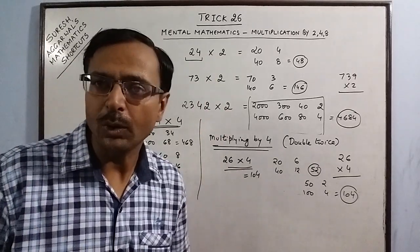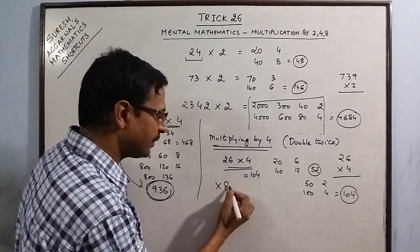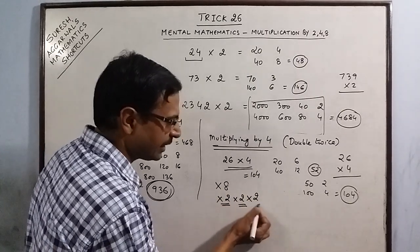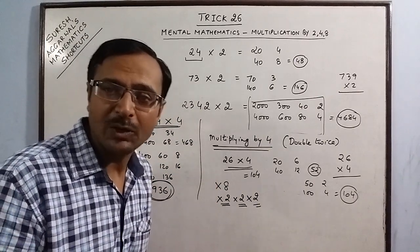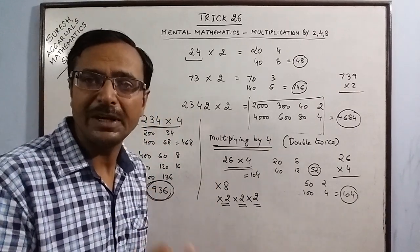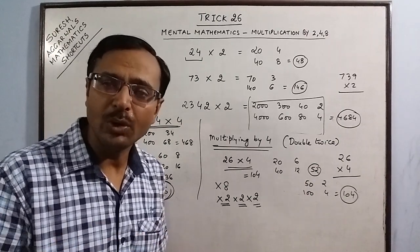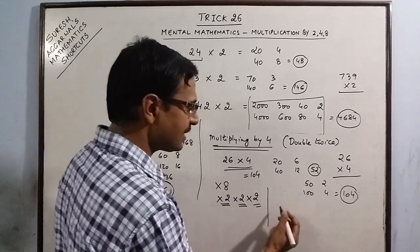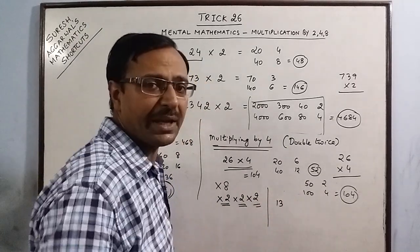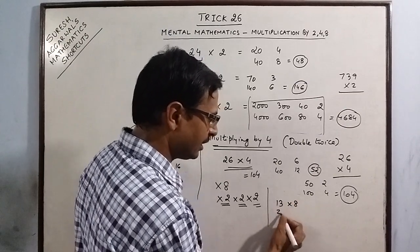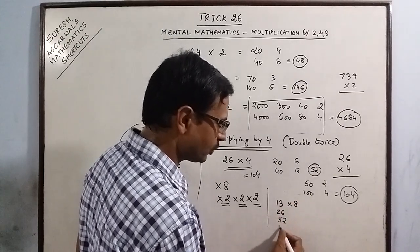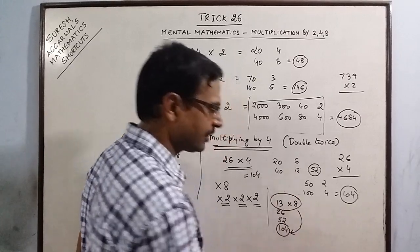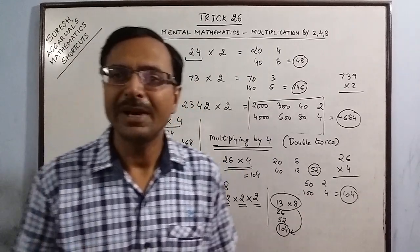You can generalize this to multiplication by 8, where multiplying by 8 means doubling the number 3 times (2 × 2 × 2). In competitive exams, when there's a calculation involving multiplication by 8, you don't need pen and paper. For example, 13 by 8: double 13 gives 26, double 26 gives 52, double 52 gives 104. So 13 × 8 = 104. This is how mental maths works.